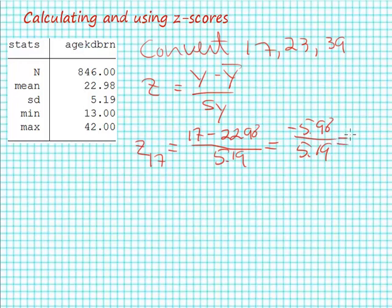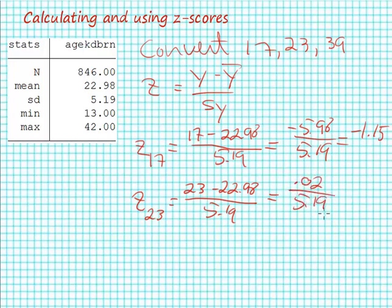Notice that in the numerator the number is negative, meaning that an age of 17 is below average, which we can see since the average is about 23. This has to be a negative number and we get approximately minus 1.15.